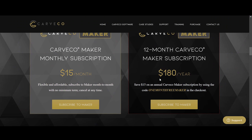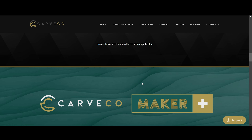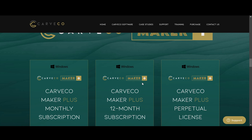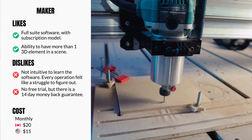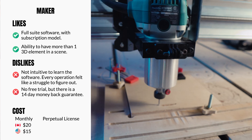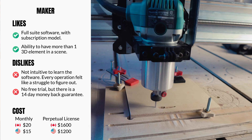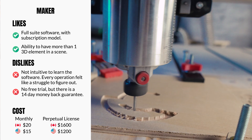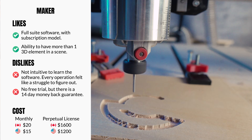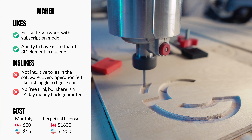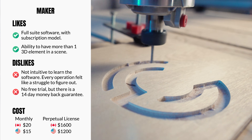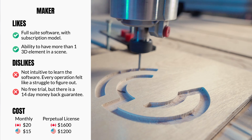For the cost of Maker, it's about $15 US or $20 Canadian for a monthly subscription, or you can buy a perpetual license which is about $1,200 US or $1,600 Canadian. As far as software location, it is locally installed — not cloud-based. If that's a factor for you, now you know.